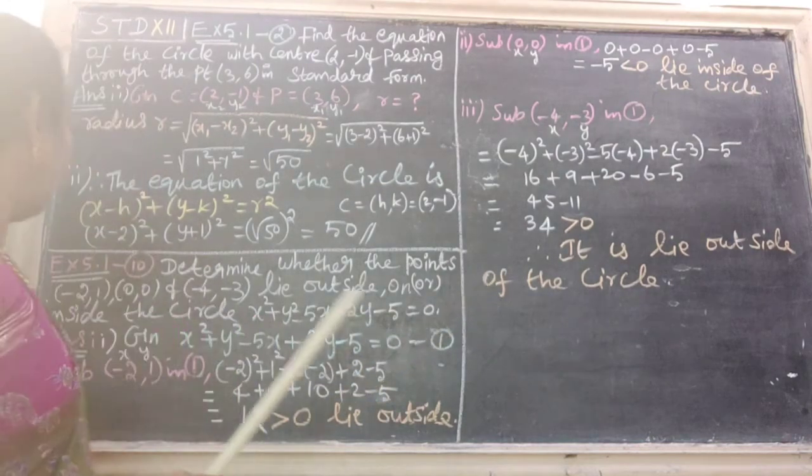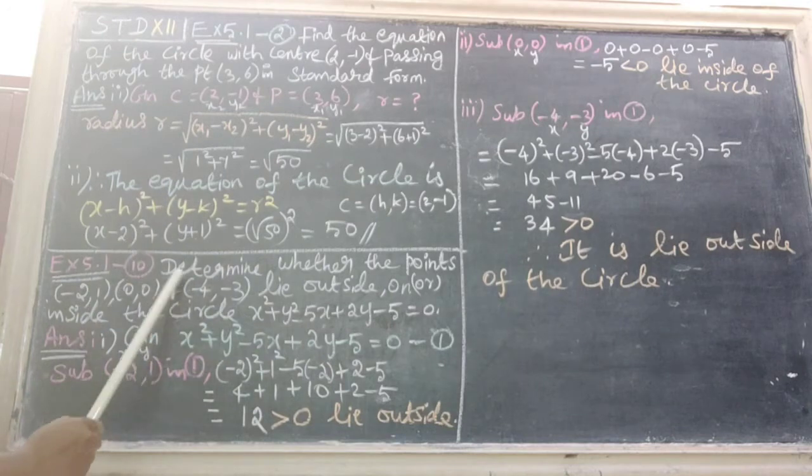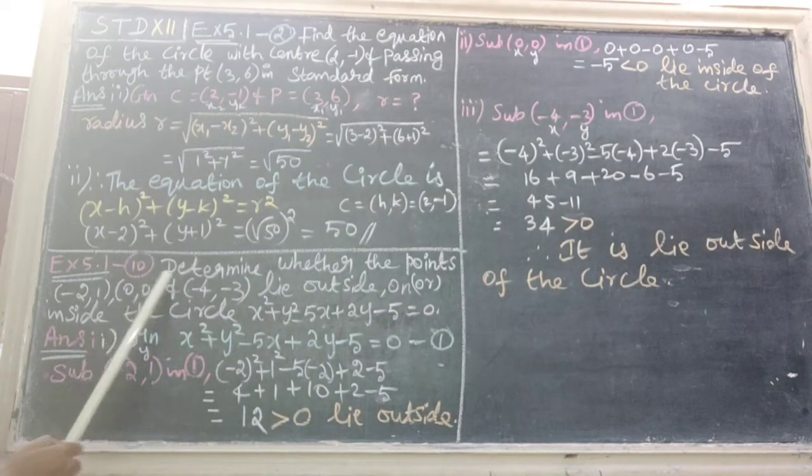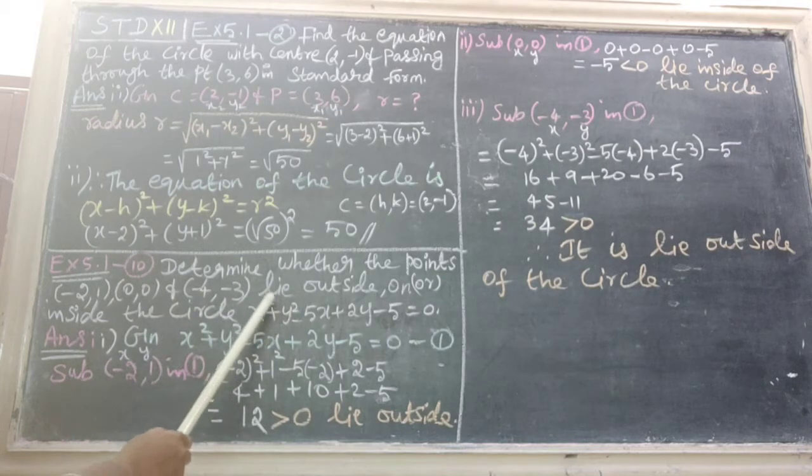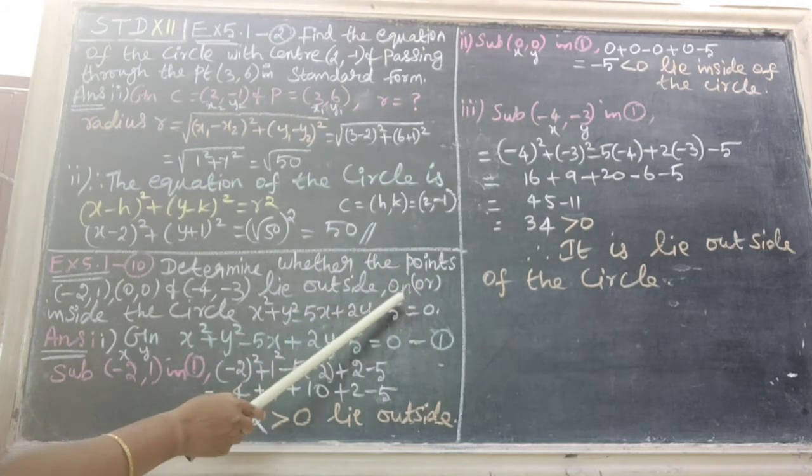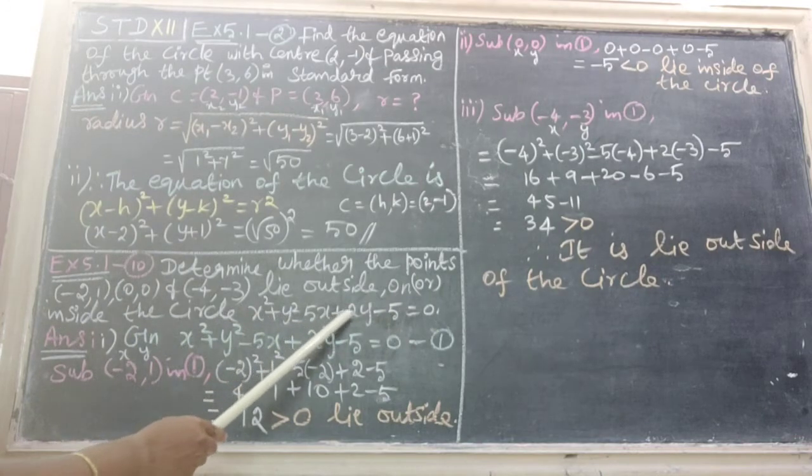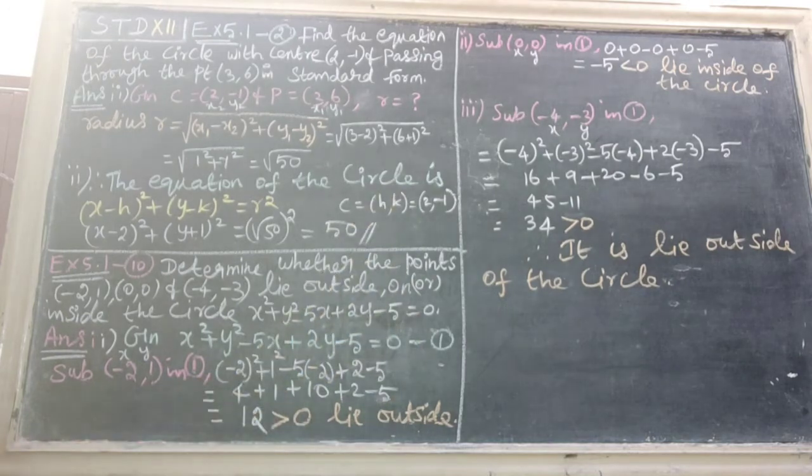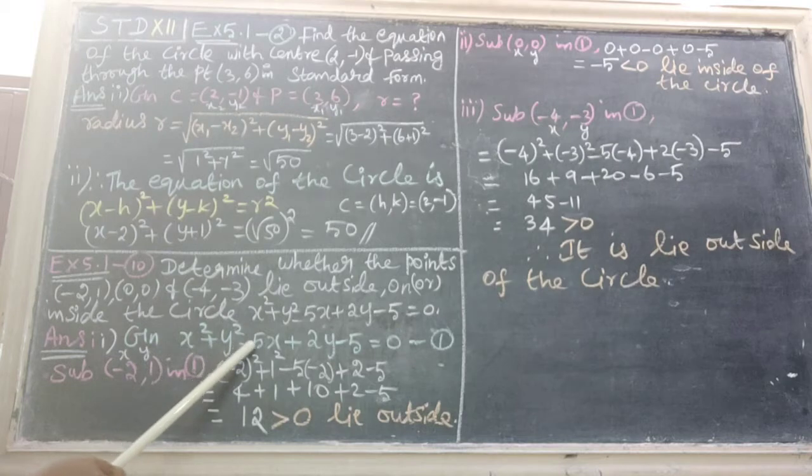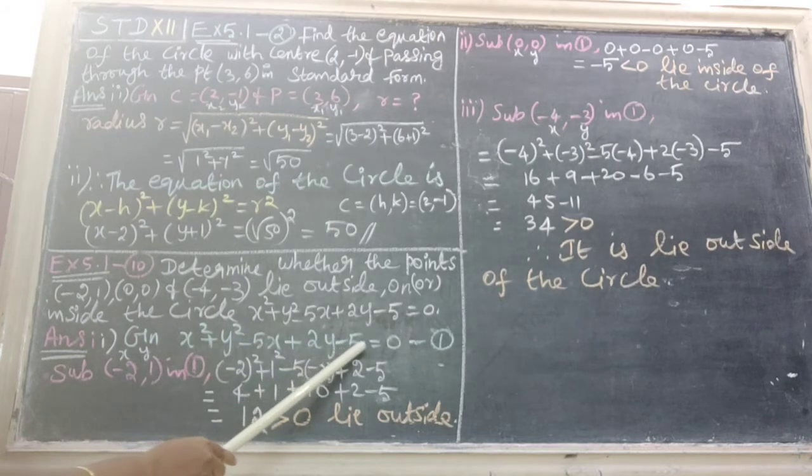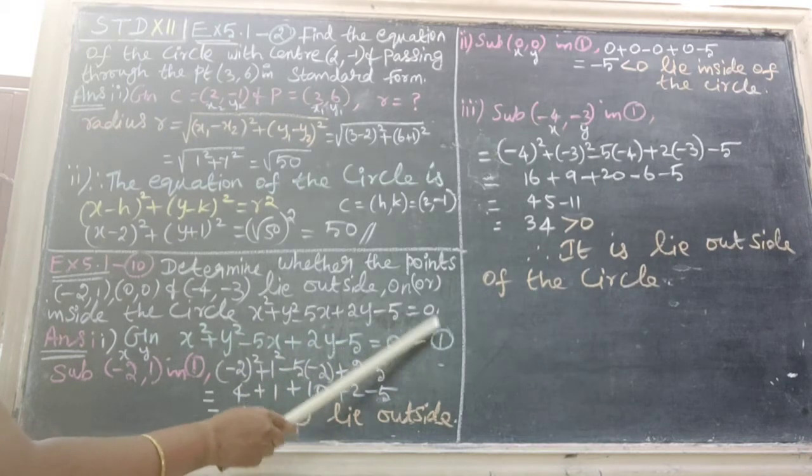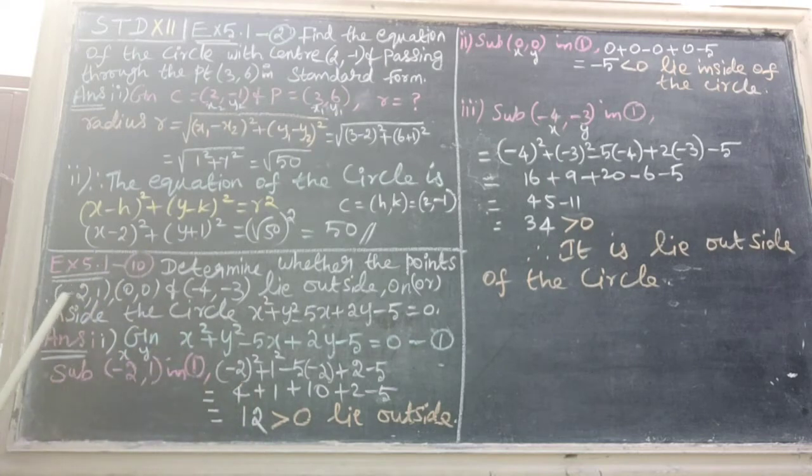Next sum is the third question from Exercise 5.1, question 10: determine whether the points minus 2 comma 1, 0 comma 0, and minus 4 comma minus 3 lie outside, on, or inside the circle x square plus y square minus 5x plus 2y minus 5 equals 0. Take the first equation, then substitute the first point minus 2 comma 1 in the equation.